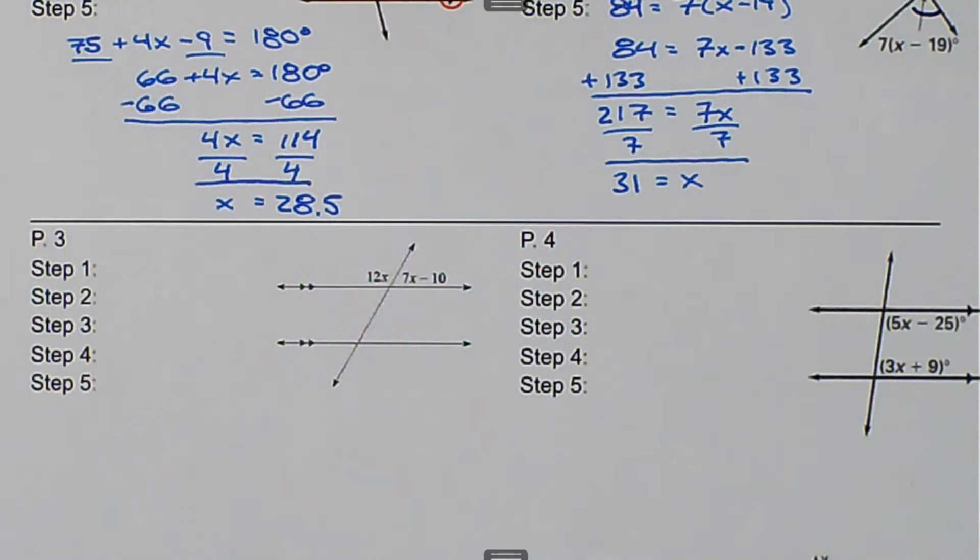We are talking about parallel lines cut by transversal, and we want to use the angle relationships in order to solve to find missing values.